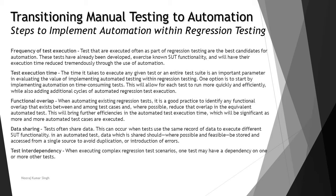Regarding functional overlap: when automating existing regression tests, you may already have a manually written regression test suite. It is good practice to identify any functional overlap that exists between test cases and, wherever possible, reduce that overlap in the equivalent automated tests. When converting manual to automated test cases, overlap can occur, so it is important to overcome it so that more automated tests can be executed efficiently.